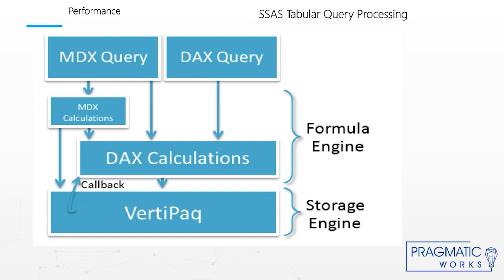MDX queries against tabular models are not translated into DAX queries. MDX queries are resolved natively by the MDX formula engine, which can call into the DAX formula engine to resolve DAX measures. The MDX formula engine can also call directly into the VertiPaq engine in cases such as querying dimensions. Excel generates MDX queries to support pivot tables connected to Analysis Services. DAX calculations in the formula engine can request data from the VertiPaq storage engine as needed. The formula engine allows very rich, expressive calculations.